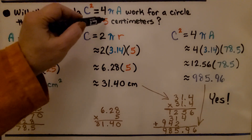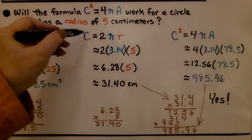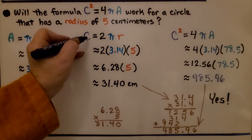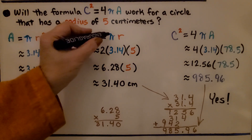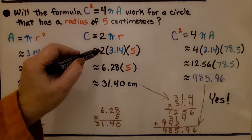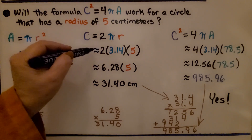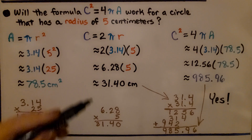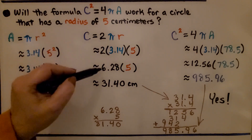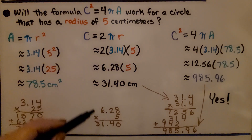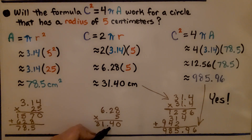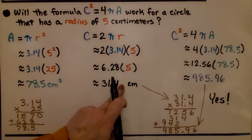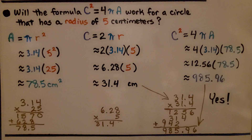Now we plug 5 centimeters into the circumference formula. The circumference formula is C = 2πr, so we have 2 times 3.14 — again using the approximation symbol — times 5. Two times 3.14 is 6.28, and multiplying that by 5 gives us 31.4 centimeters. So the circumference is approximately 31.4 centimeters.